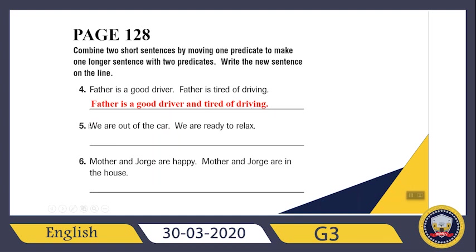The fifth sentence says: We are out of the car. We are ready to relax. Which part is the common part? 'We are', right? So I write the first sentence directly: We are out of the car. And which one is the uncommon part? Ready to relax. So: We are out of the car and ready to relax.